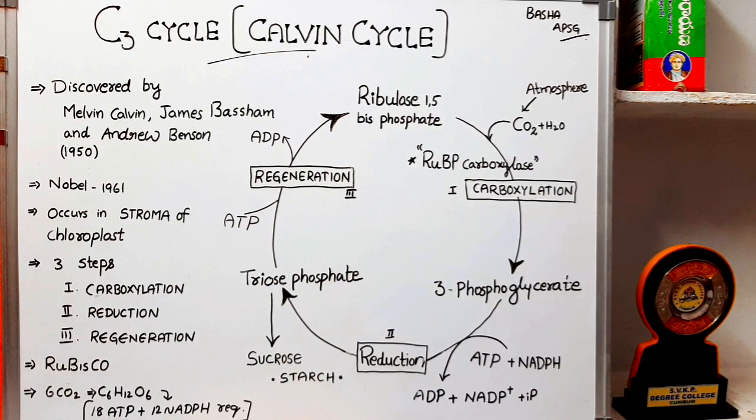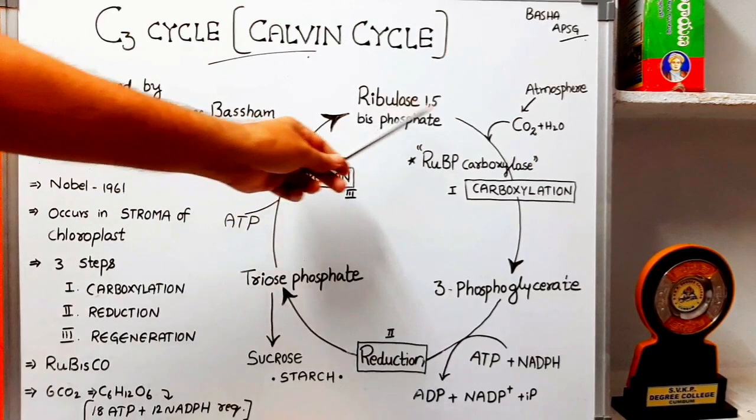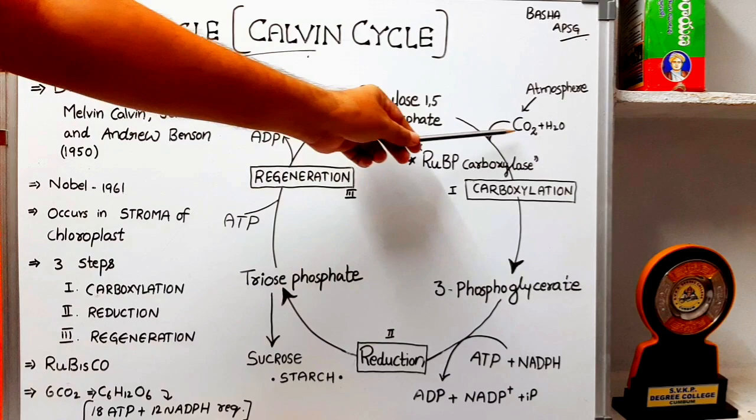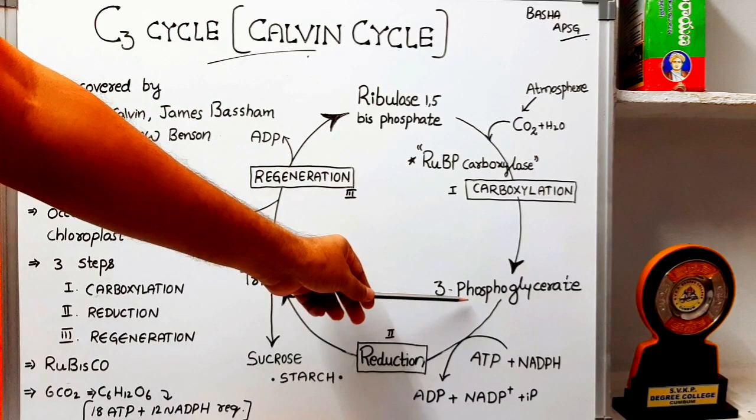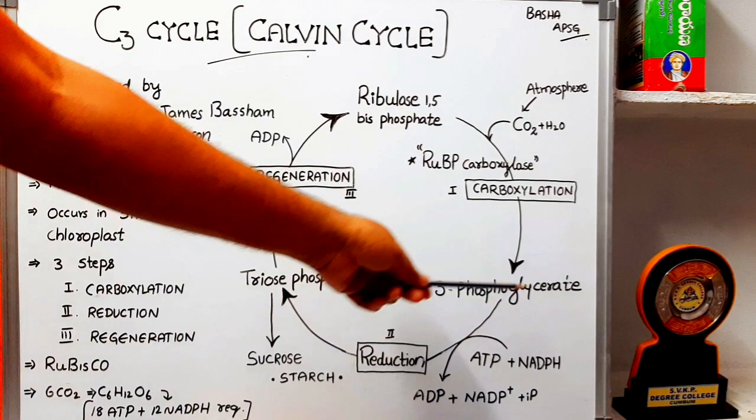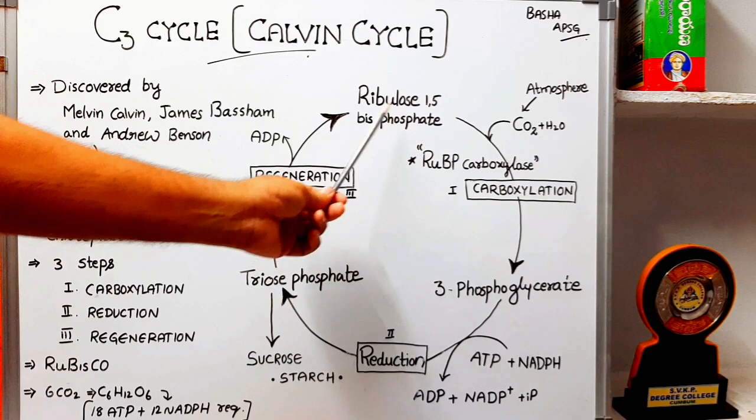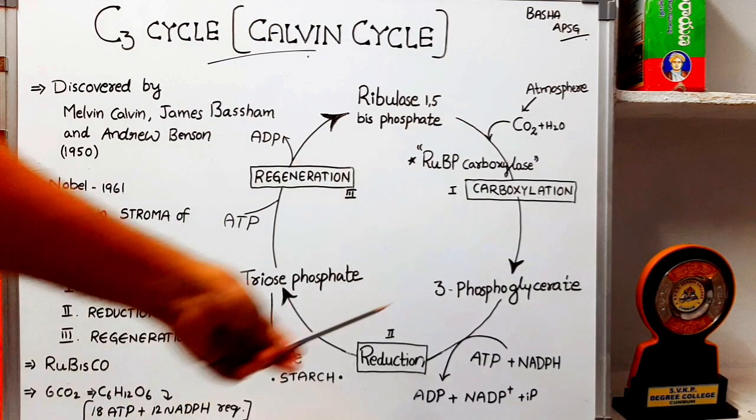Two molecules of phosphoglycerate are formed, and each molecule consists of 3 carbons. To balance: ribulose 1,5-bisphosphate is a 5-carbon compound, plus CO2 which is 1 carbon, giving 6 carbons total. Each phosphoglycerate consists of 3 carbons, and 2 molecules are formed, so 2 times 3 equals 6. This balances correctly.